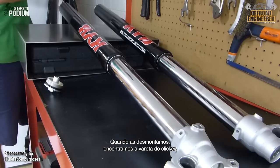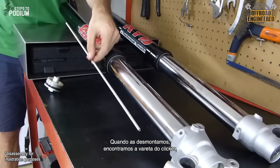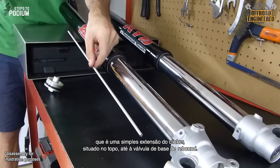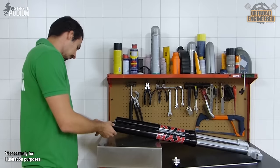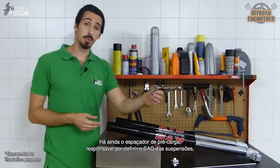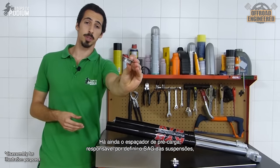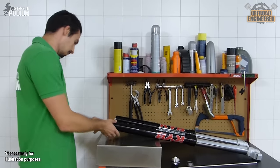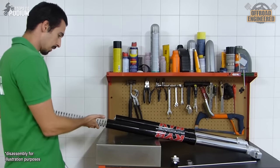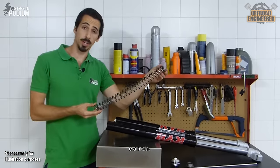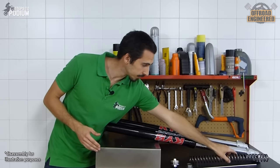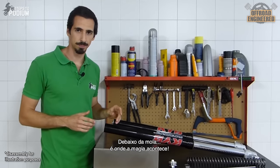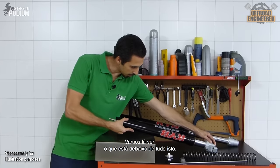You'll find the push rod which is a simple extension from the clicker on top to the rebound base valve. The preload spacer which is responsible for setting the sag of the front forks. And the spring. And below the spring is where the magic happens. So let's see what's underneath all of this.